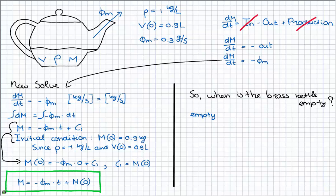So when it is empty, there is no water inside. So the mass of the water is 0. So I can use my final equation again here and just fill in the time at which the mass is 0. So m is 0.